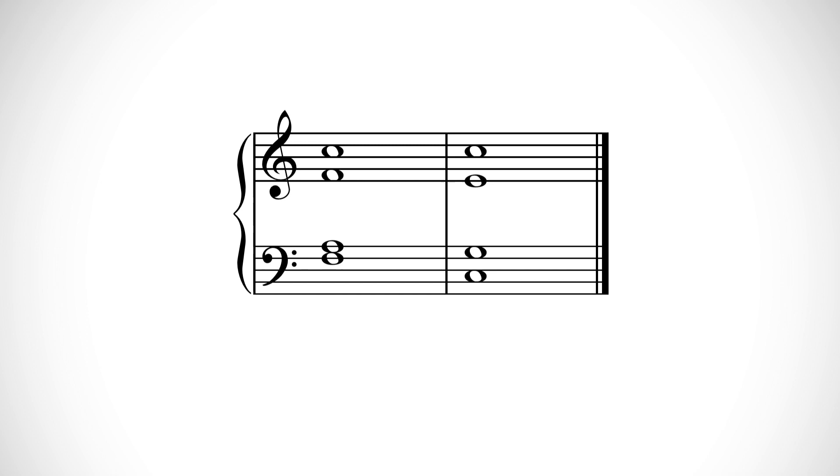Plagal cadence. A plagal cadence is often attached to the end of a section after a perfect cadence. It's almost like the icing on the cake or the gravy. Not structurally necessary, but adds a little something extra. It consists of a IV going to a I chord.